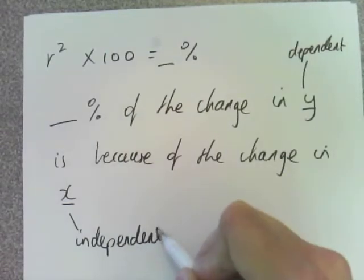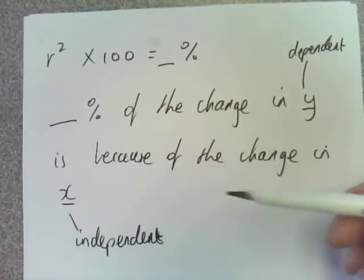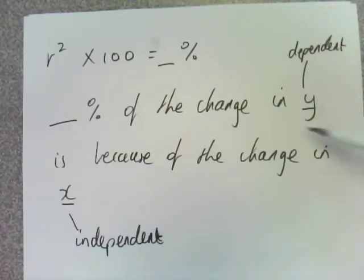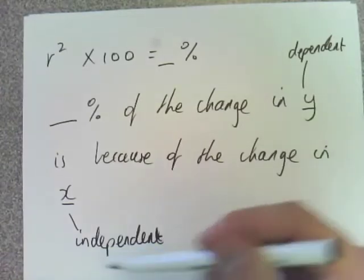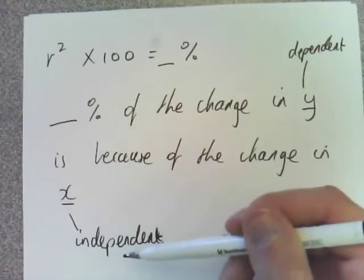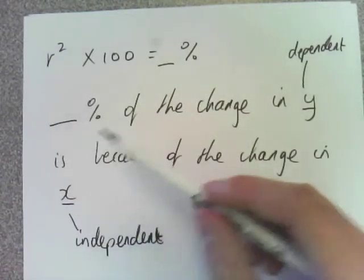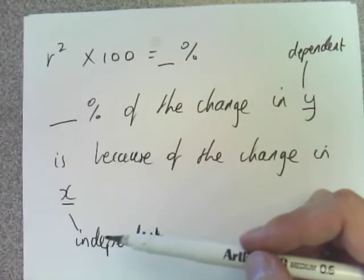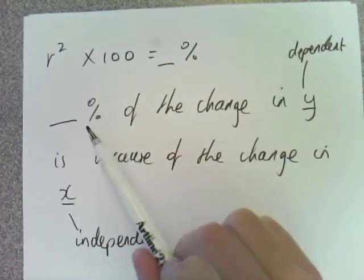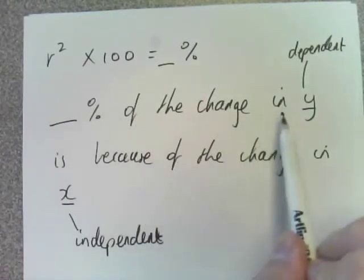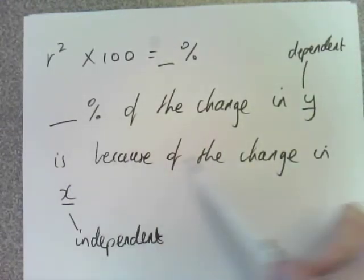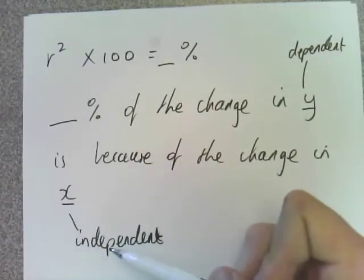If we tie it back to those words, it's not going to make sense. If you say that sentence and you put x here, it's not going to make sense, is it? Because x doesn't depend on any others to change. That's independent. Make sense? Be very careful. When you're writing a sentence like this, which you're going to have to do, the percentage of the change in the dependent or the y is because of the change in the x or the independent.